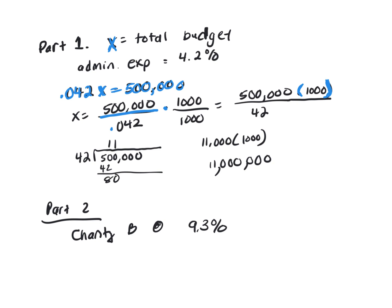I applied 1,000 and multiplied that times 0.042. That's going to give me a whole number of 42. Then I did my long division. 42 will go into 50 one time. 1 times 42 is 42. I subtracted and brought down that 0.